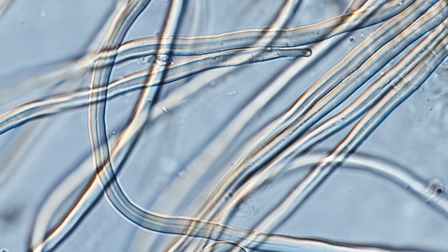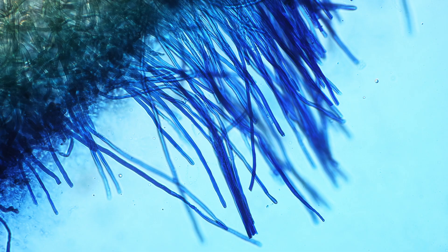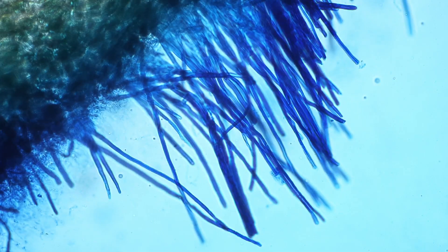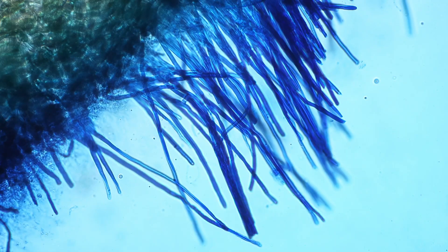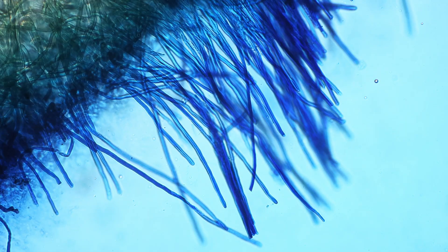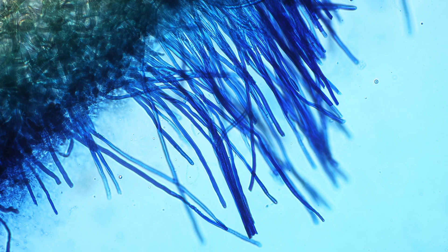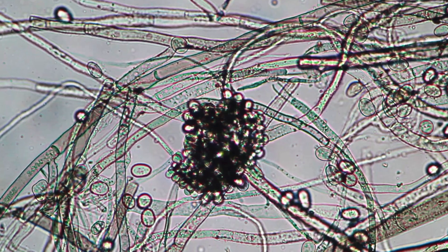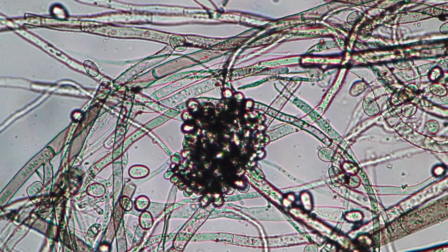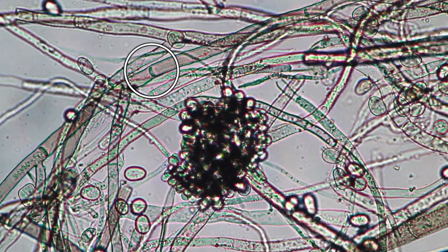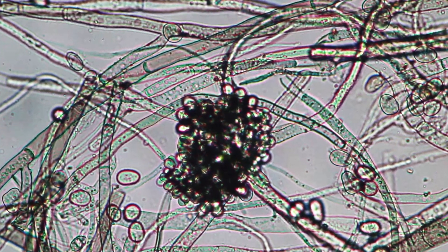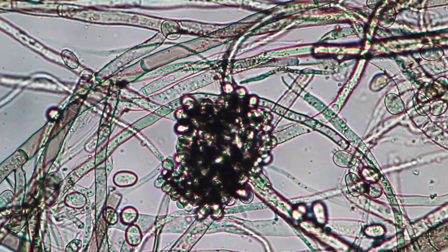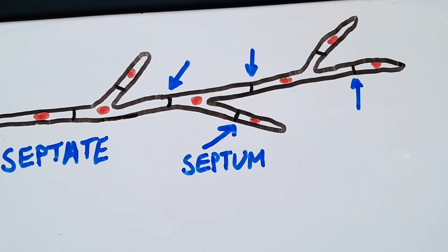Here's where the methylene blue staining comes in. As the stain traveled through the cytoplasm of the aseptate hyphae, you could see how substances move freely within this continuous structure. Without septa to block the flow, nutrients and molecules are transported quickly and efficiently. For comparison, here's an image of a septate fungus I observed earlier. Notice the cross walls dividing the hyphae into distinct cells. These septa give septate fungi a more compartmentalized structure, unlike the seamless continuity of aseptate fungi.